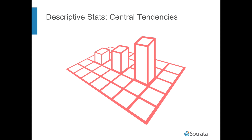Now we're going to take a look at three measurements of central tendency in your data: the mean, median, and mode. Measures of central tendency should give you a single number that describes the general characteristics of the data — what is typical or representative. Let's see how that works.